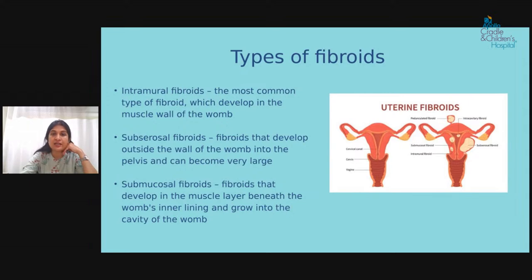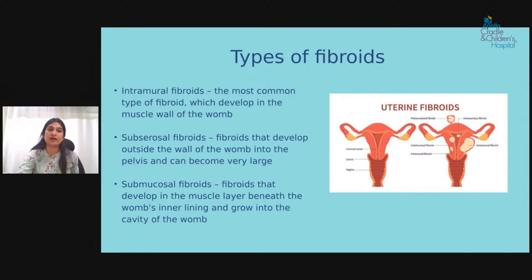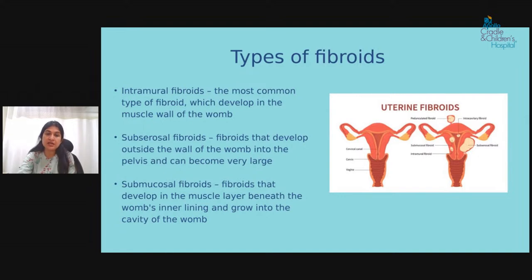The third type is submucosal fibroid. These develop from the muscle but enter into the uterine cavity. They most commonly affect bleeding and cause infertility problems because being inside the cavity affects pregnancy and implantation. They can also cause continuous discharge if infected. To summarize: intramural grows inside the muscle, subserosal grows outside on the serosal layer and can become pedunculated, and submucosal is inside the uterine cavity.